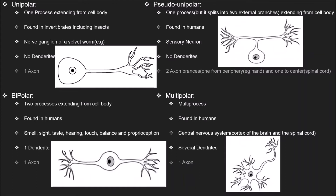Unipolar neurons have no dendrites, same as pseudo-unipolar neurons. Bipolar neurons have one dendrite, and multipolar neurons have several dendrites. Regarding axons: unipolar neurons have one axon; pseudo-unipolar neurons have two axon branches — one from the periphery, for example the hand, and one connecting to the center such as the spinal cord. Bipolar neurons have one axon, and multipolar neurons also have one axon.